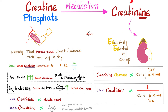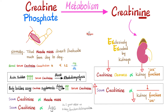How about creatinine? Creatinine comes from creatine phosphate metabolism, which occurs in the muscle. Creatine phosphate gets metabolized into creatinine, which goes into the blood and should be excreted by the kidney. As kidney function deteriorates, creatinine clearance goes down, leaving more creatinine behind in the blood.